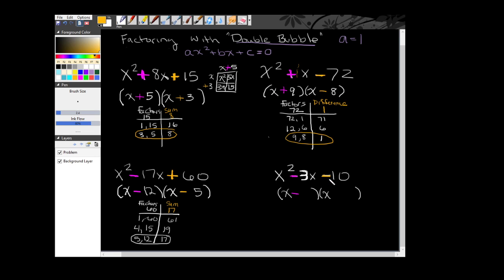My second sign is also a negative. So to create a negative 10 here, I need opposite signs. I already have a minus, so that means that my second sign will be a plus.